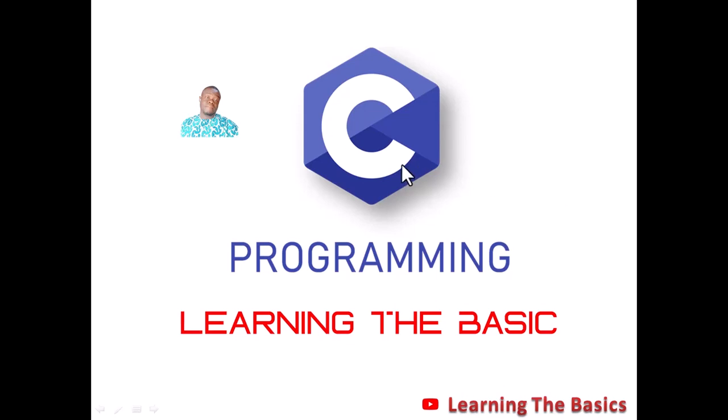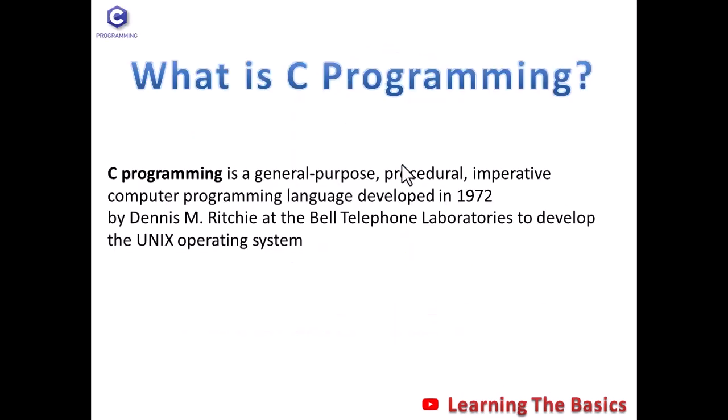What is C programming? C programming is a general purpose procedural imperative computer programming language developed in 1972 by Dennis M. Ritchie at the Bell Telephone Laboratory to develop a Unix operating system.